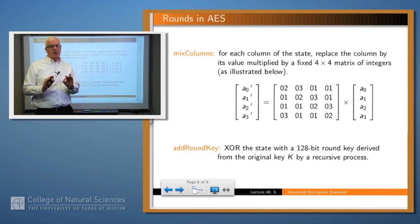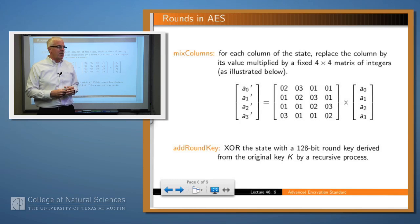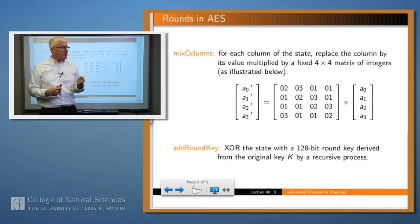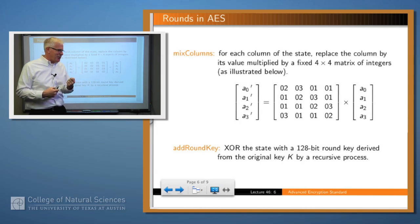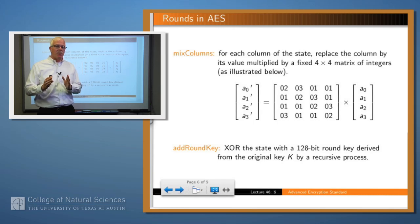The third step is a little more complicated and is called MixColumns. You take each column of the array and multiply that column by a fixed 4x4 array of integers — a constant array used each time — and the result is again a column. The multiplication is not simple integer multiplication; it's multiplication in a particular Galois field. The last step in the round is called AddRoundKey: you take the round key generated from the original key — a 128-bit quantity — and XOR it with the state.